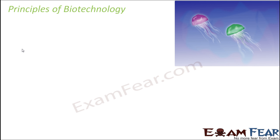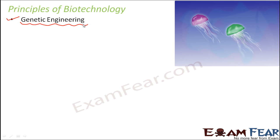On the screen you can see a picture of a jellyfish. There is a reason behind it — they are going to be one of the classic examples we will use whenever we talk about the mix and match between different organisms. The first principle of biotechnology is genetic engineering. In simple terms, it is engineering with genes — you play around with genes, taking genes from one animal and putting them inside another to get some desired feature.